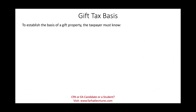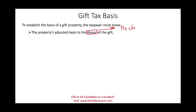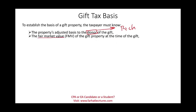To establish the basis of gift property, you must know three things. First, the property's adjusted basis to the donor — the donor being the generous person giving you the gift. Second, the fair market value at the time the gift was given. Third, whether any gift taxes were paid on the property. These three items determine your basis as the donee, the person receiving the gift.